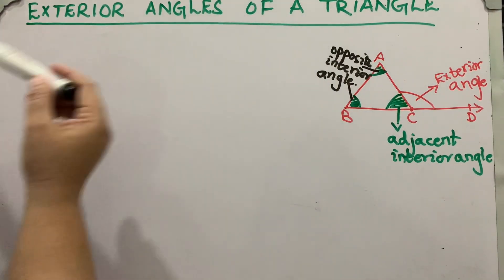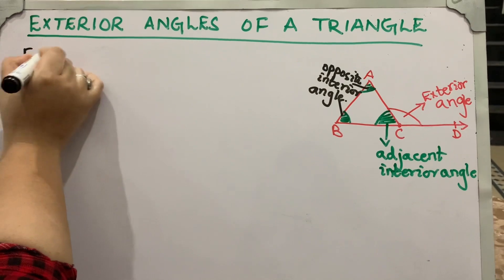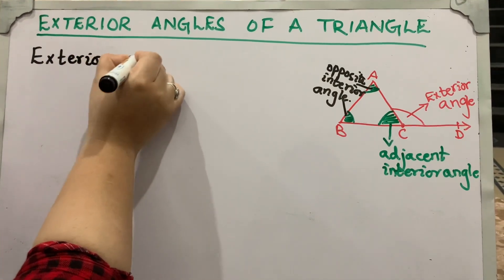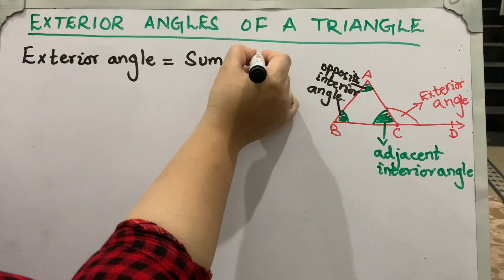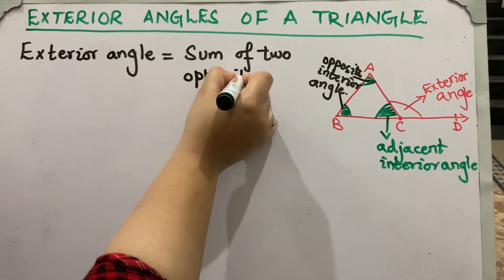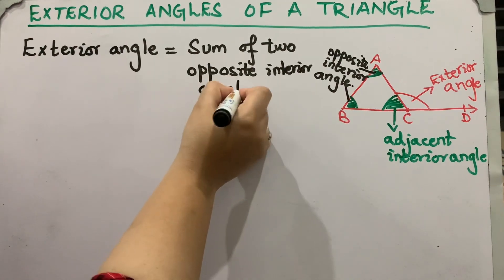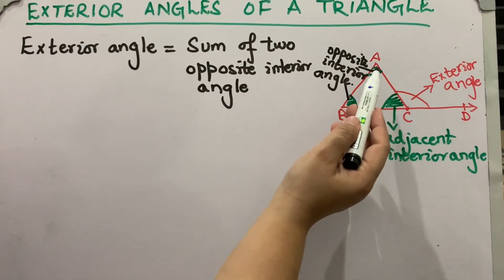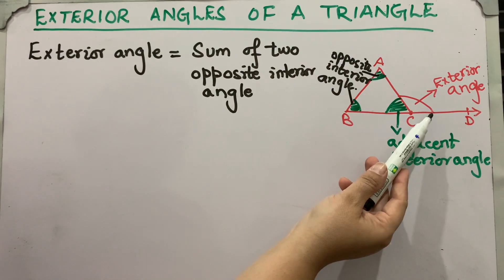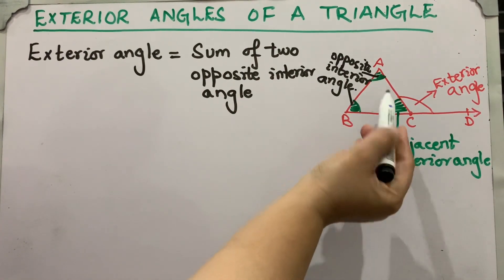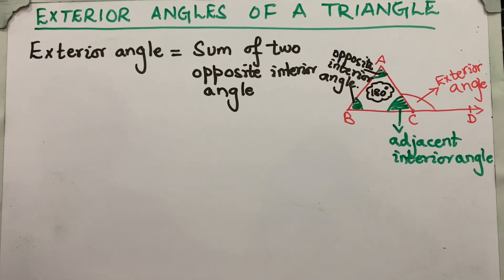The property of an exterior angle of a triangle is that the exterior angle is equal to the sum of the two opposite interior angles. It means angle ACD is equal to angle A plus angle B. Also, the sum of all interior angles of a triangle is equal to 180 degrees.